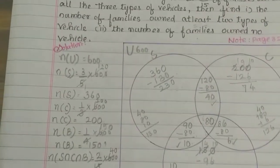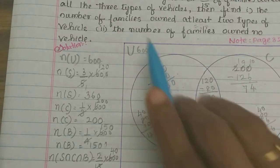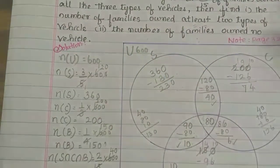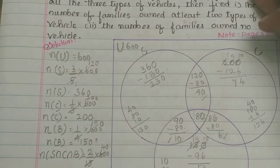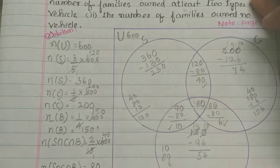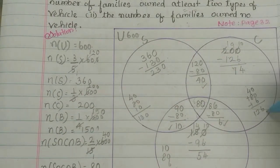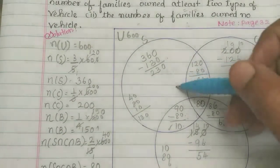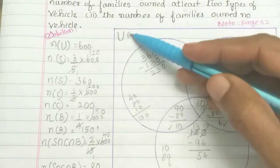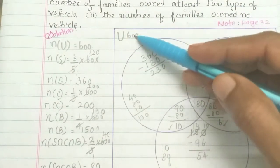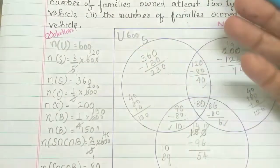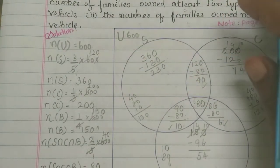Next question: find the number of families that owned no vehicles. First, we find the total number of families that owned at least one vehicle. We add: scooter only is 230, plus car only 74, plus bicycle only 54, plus the intersection regions 40 plus 10 plus 6 plus 80, giving 136.